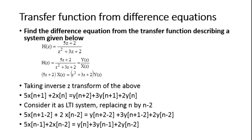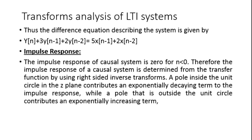Considering this as an LTI system and replacing n by n minus 2, we get 5x(n minus 1) plus 2x(n minus 2) equals y(n) plus 3y(n minus 1) plus 2y(n minus 2). Thus, the difference equation describing the system is y(n) plus 3y(n minus 1) plus 2y(n minus 2) equals 5x(n minus 1) plus 2x(n minus 2).